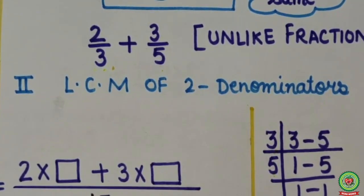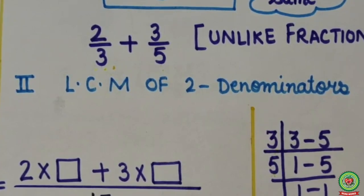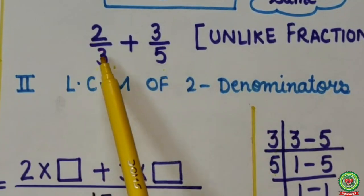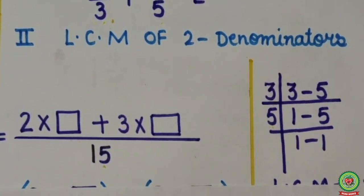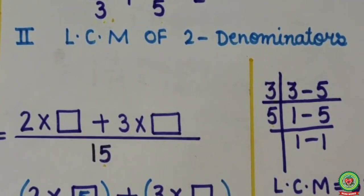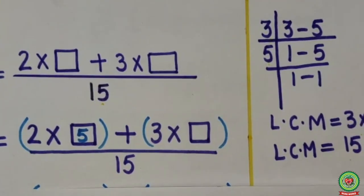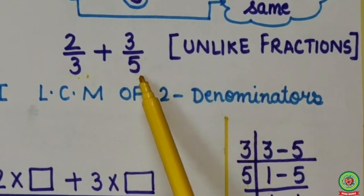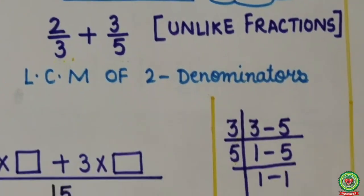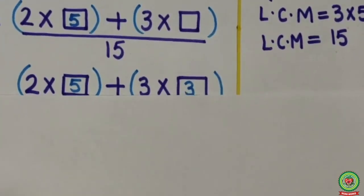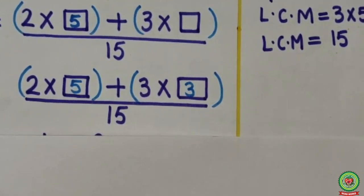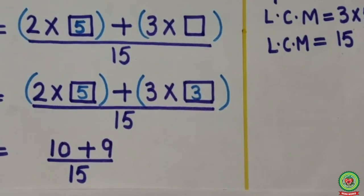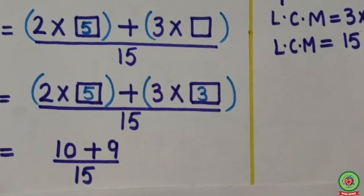Now how to find these numbers? Here we will check the denominator. In table of 3, 15 will come at 5. So in the first bracket, we will put 5. Now see the second fraction. Here denominator is 5. In table of 5, 15 will come at 3. So in the second bracket, I will put 3. It will come 2 into 5 equals 10, and 3 into 3 equals 9. So here it is coming 10 plus 9 upon 15.